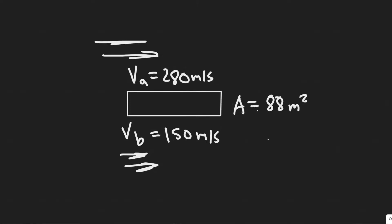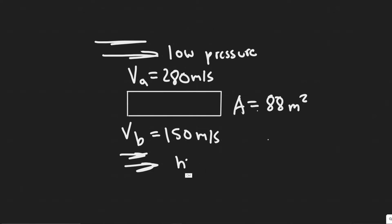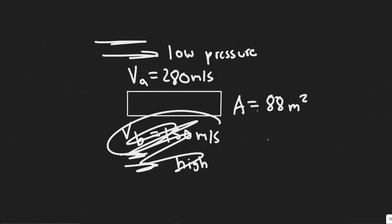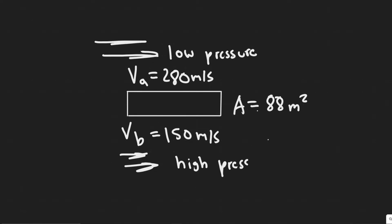The first thing to understand is a key rule: the higher the velocity the air passes through, the lower the pressure is going to be. So the top is going to experience low pressure, and we can say high pressure for the bottom because the velocity is slower there. The pressure in the bottom region is greater than the pressure on top because velocity is lower there.